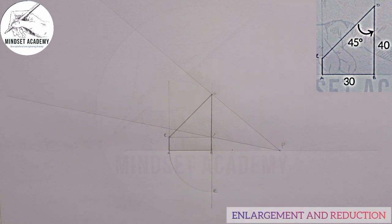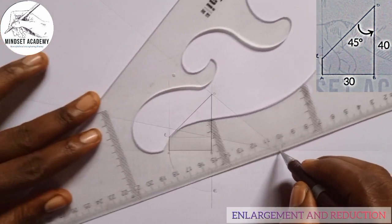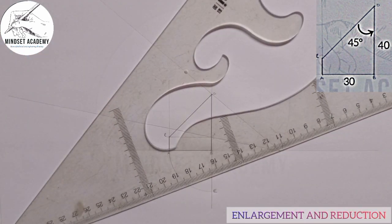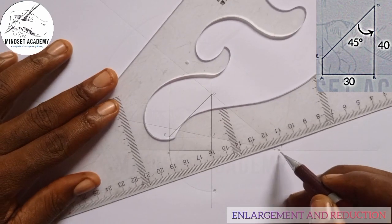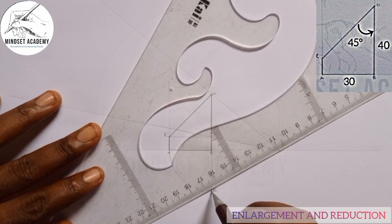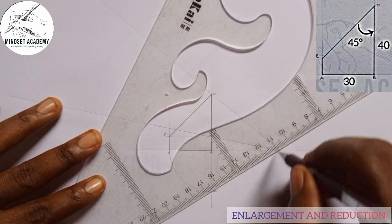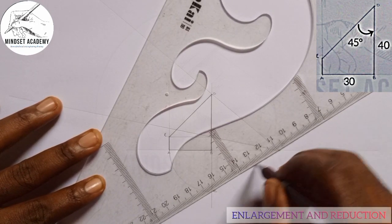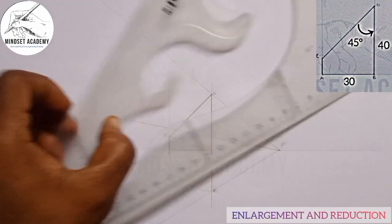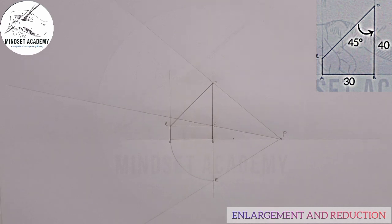Now I'm going to take my ruler and draw a line that will pass through Point E in this manner.